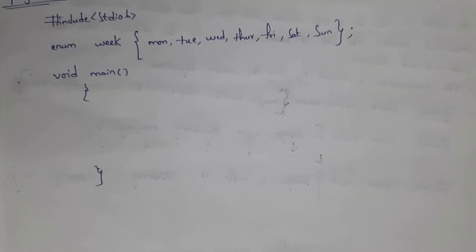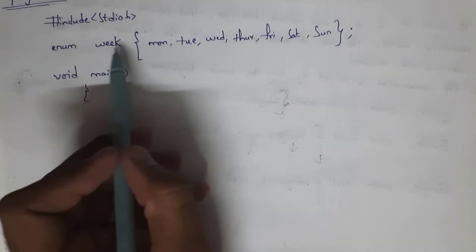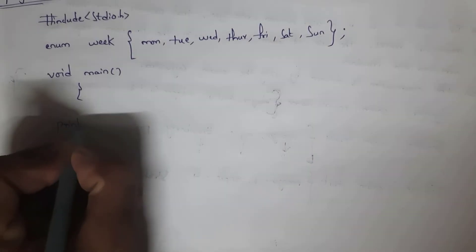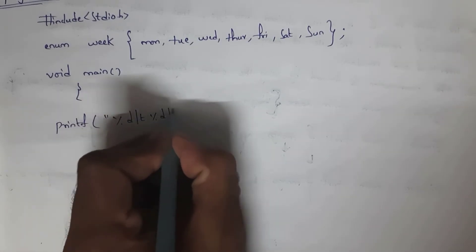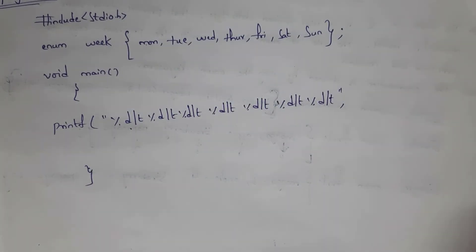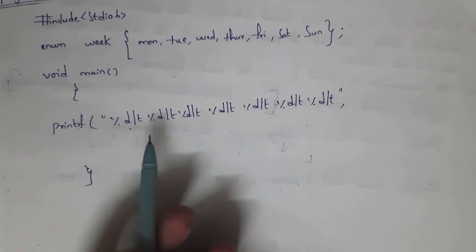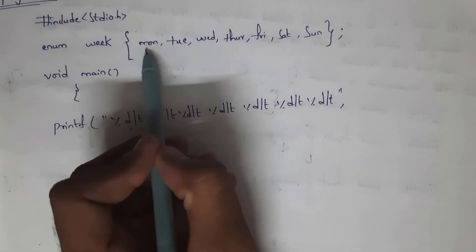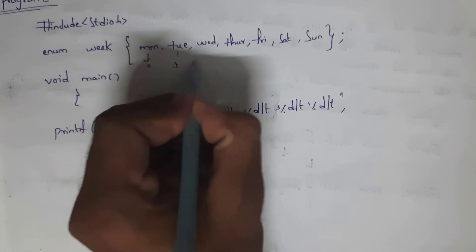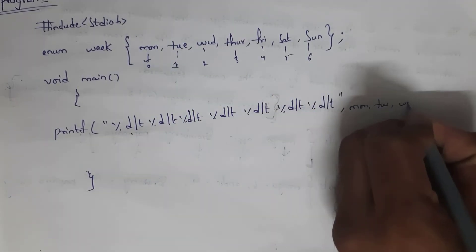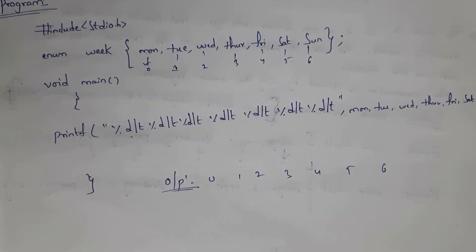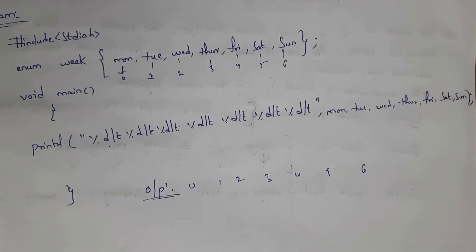Here I took the enumeration data type outside the main function. I wrote the enum keyword and took the enum name as 'week', and inside curly brackets I wrote names of the week: Monday, Tuesday, Wednesday, Thursday, Friday, Saturday, and Sunday — seven names total. In printf I use the %d format specifier because enumeration converts names into integer values. Since I did not assign any values, by default it starts at 0 and increments, so the output is 0 1 2 3 4 5 6.